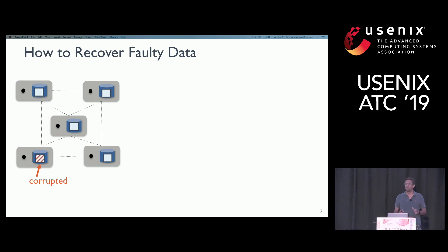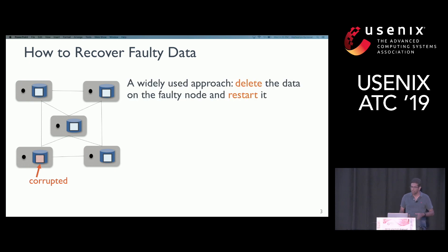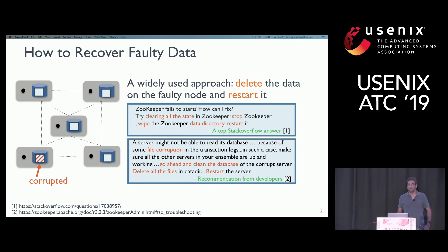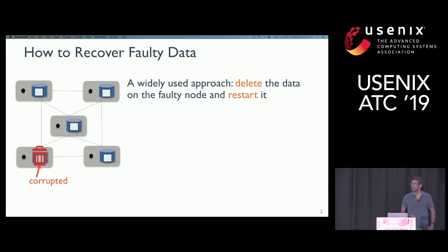Now let's talk about how to recover a piece of data affected by a storage fault in a distributed system. Starting with a very simple and popular example: delete the data on the faulty node and just restart the node. This is widely used, as you can see in many developer forums. For example, in Zookeeper, developers say on a file corruption, go ahead and clean the database, delete all the files, and just restart the node and you'll be fine.